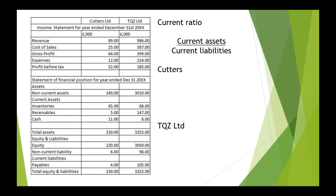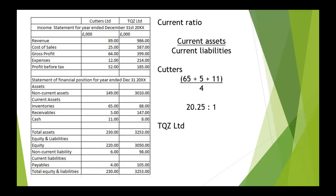We're talking about current assets divided only by current liabilities. So we look at the current ratio for these two companies. For Cutters, current assets are 65, plus 5, plus 11, divided by the current liabilities of 4, and that comes to a ratio of 20.25 to 1. And for TQZ Limited, 88 plus 147 plus 8, divided by 105, comes to 2.31 to 1.